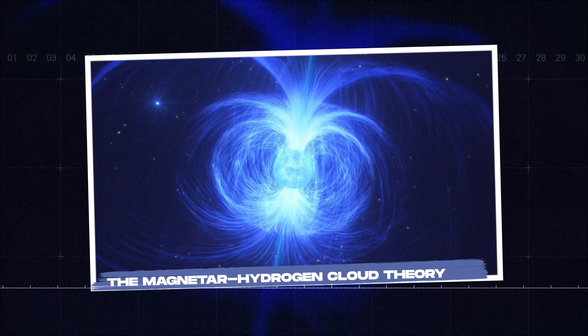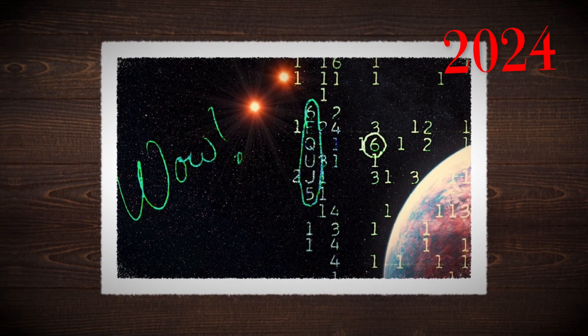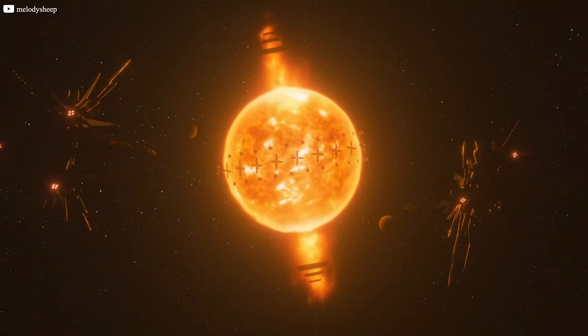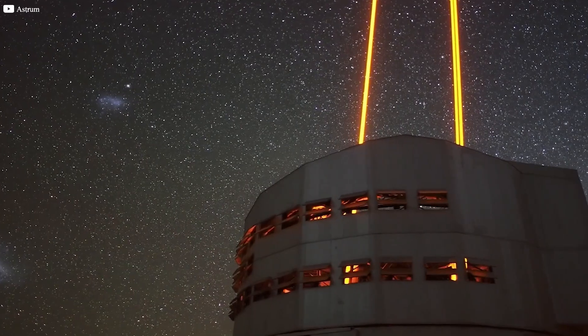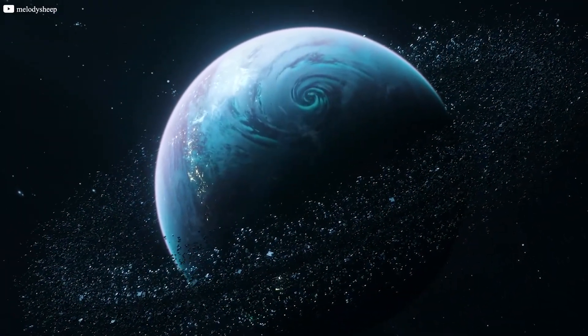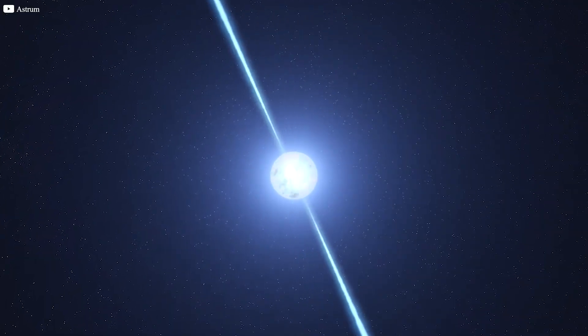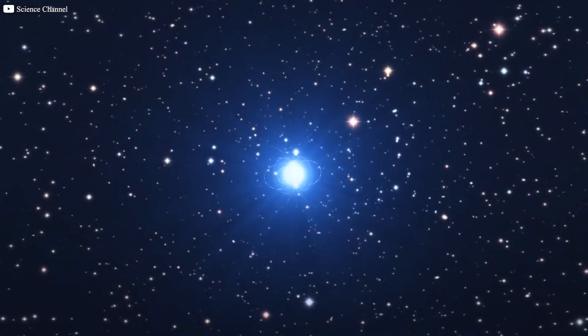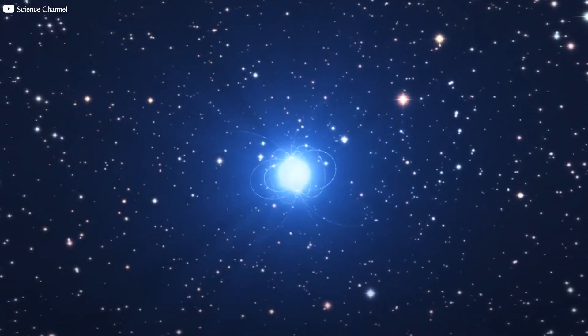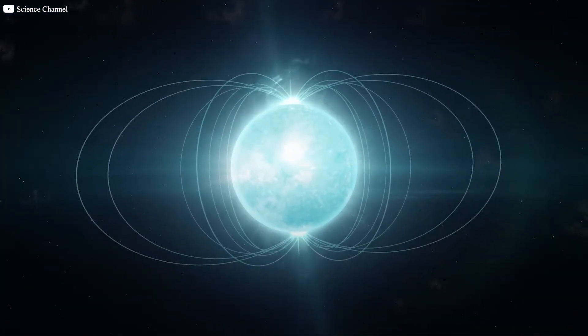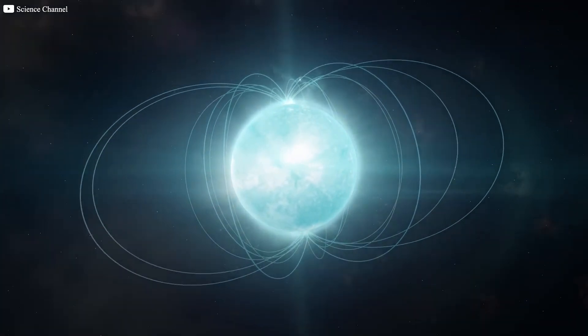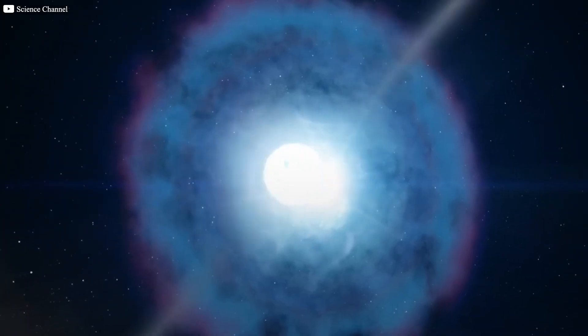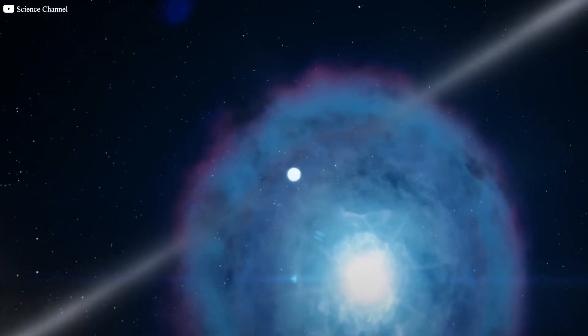The magnetar-hydrogen cloud theory. In 2024, a breakthrough in understanding the wow signal came from a team studying red dwarf stars at the Planetary Habitability Laboratory in Puerto Rico. While investigating potential habitable planets, they discovered faint narrow-band signals at 1420 megahertz, similar to the wow signal. The team theorized that a magnetar, a neutron star with an extremely powerful magnetic field, emitted a flare that interacted with a hydrogen cloud, causing the hydrogen atoms to emit a sharp, focused signal at 1420 megahertz, known as stimulated emission. This combination could explain the wow signal.